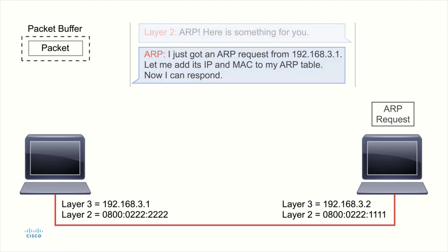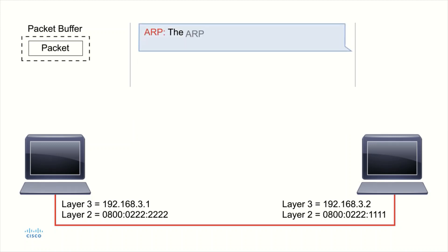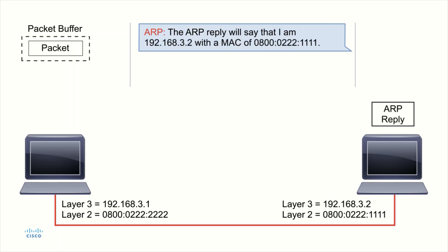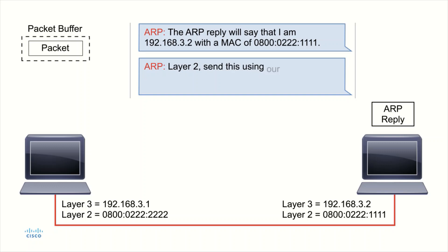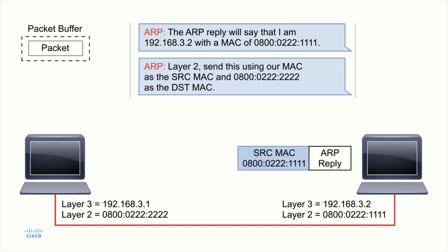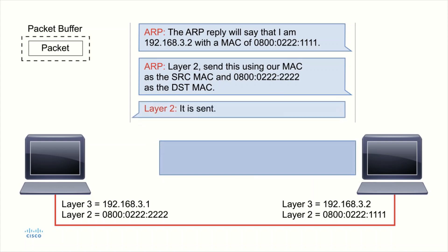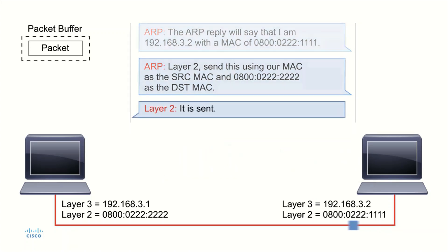ARP puts together an ARP reply that says: hi, I am 3.2 and my MAC address is 0800.0222.1111. Then ARP tells layer two: send this ARP reply using our MAC address as the source, and send it directly back to 0800.0222.2222 — no need to broadcast, send it directly to him. Layer two sends it, and the packet is now on its way.